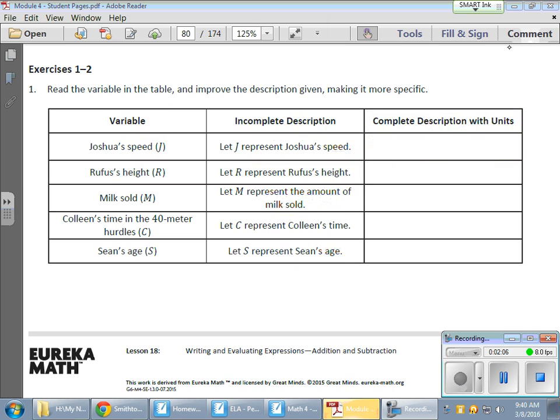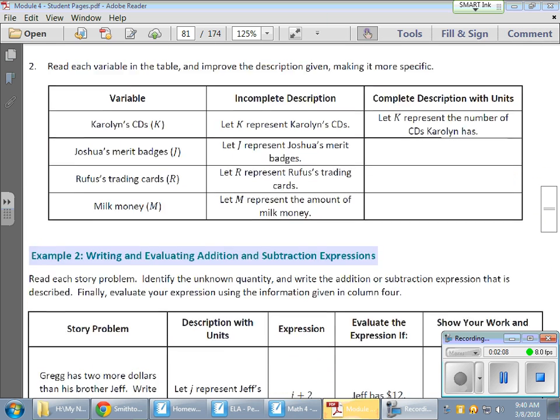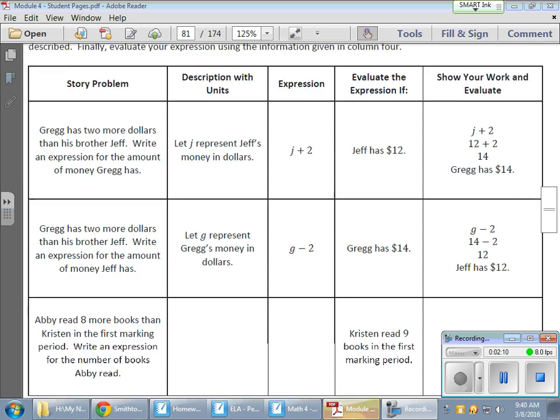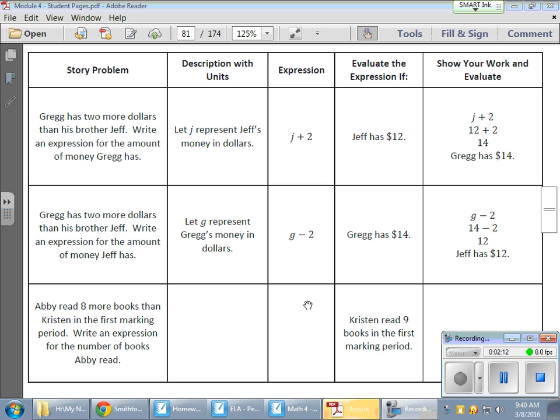Once we have all that taken care of, now we can start working on some problems here. We have Greg. He has two more dollars than his brother, Jeff. So Greg has more money, two more dollars worth. Write an expression for the amount of money Greg has. Now, all of this was done for you, so I'm just going to cruise through this one. J represents Jeff's money in dollars. In dollars, we have our units all nice and done.